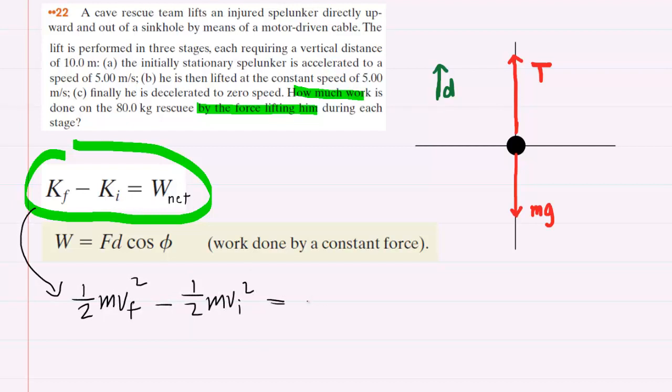For the net work, that's going to be the work done by tension, which is what we're looking for in this question, plus the work done by gravity. Now for the work done by gravity, we know that would equal the force of gravity times the distance the spelunker travels times the cosine of the angle between the gravitational force and the displacement.